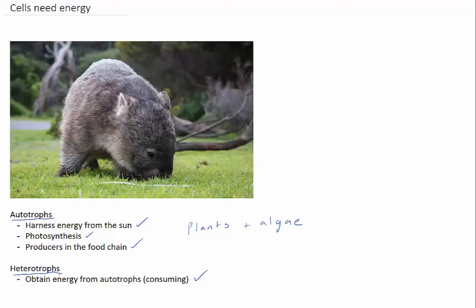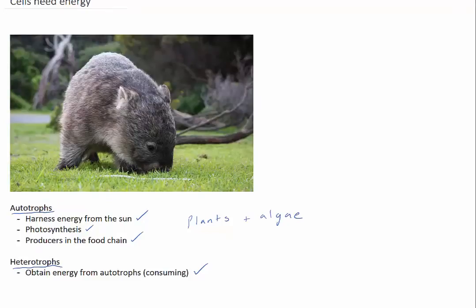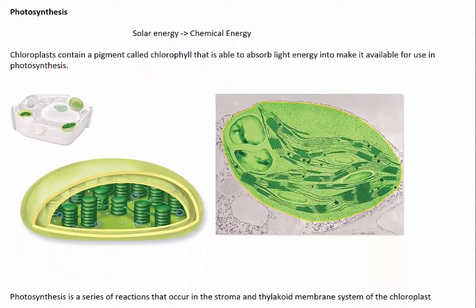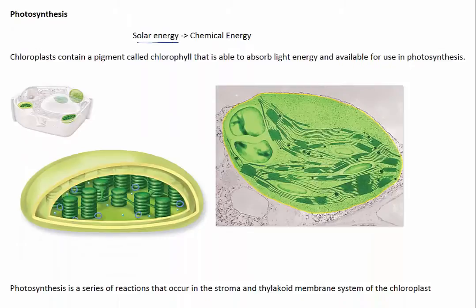In either case, if cells are supplied with enough energy, the whole organism can function efficiently. Most life depends on the energy from our sun. Autotrophic organisms convert solar energy from the sun into chemical energy through a process called photosynthesis.